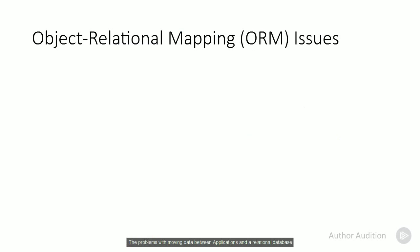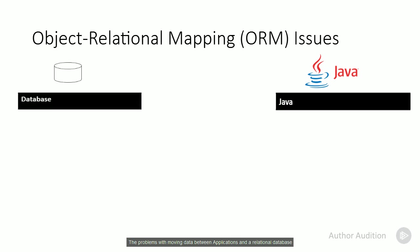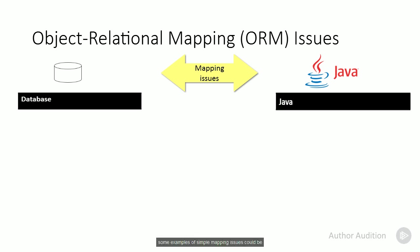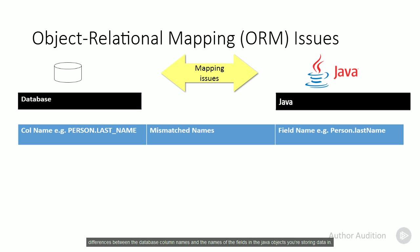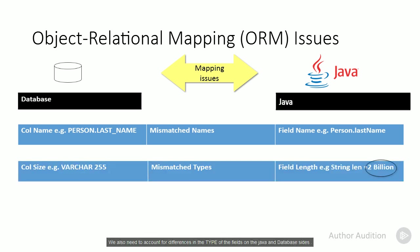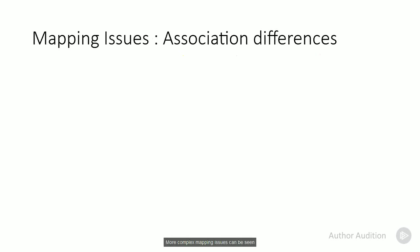The problem with moving data between applications and a relational database is that typically the field names, types, and structures don't quite line up, and the developer often needs to map from one domain to the other. Some examples of simple mapping issues could be differences between the database column names and the names of the fields in the Java objects you're storing data in. You may also need to account for differences in the type of fields on both the Java and database sides.